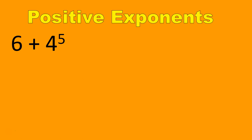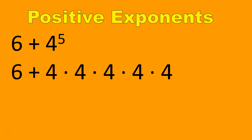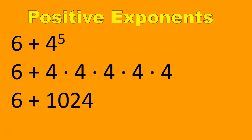So we are back. The first step is to solve the exponent, which is 4 to the power of 5. When doing order of operations, you do parentheses, then exponents, before we take care of that addition. If you want to expand that out into 4 times 4 times 4 times 4 times 4, that's fine. Either way, you're going to get 1,024. 6 plus 1,024 will give you 1,030. That's your final answer for this question with the positive exponent.